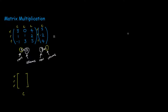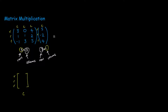Now comes the tricky part — multiplying the actual matrices together. The rule in matrix multiplication is that you take the first row from the first matrix, which is 3, 0, 4, and multiply it by the first column of the second matrix, which is 5, 2, 4. So you get: 3 times 5, which is 15, plus 0 times negative 2, which is 0, and 4 times 4, which is plus 16.